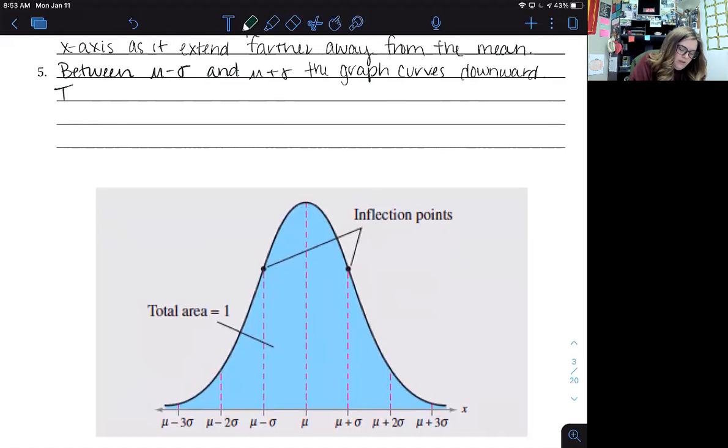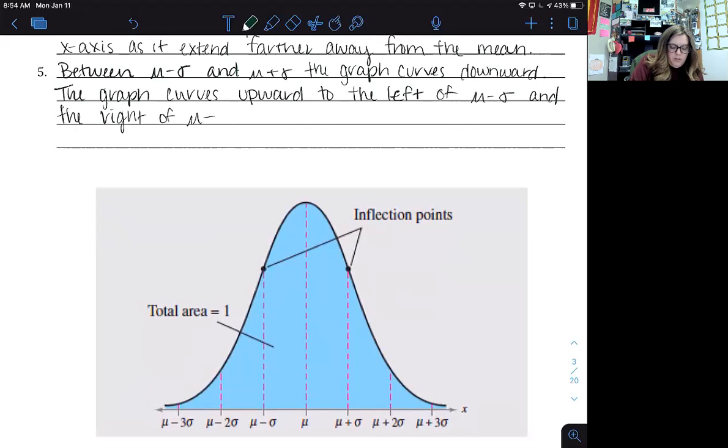And then the graph curves upward to the left of mu minus sigma and to the right of mu plus sigma. And those points where it changes direction on the curve are called inflection points.